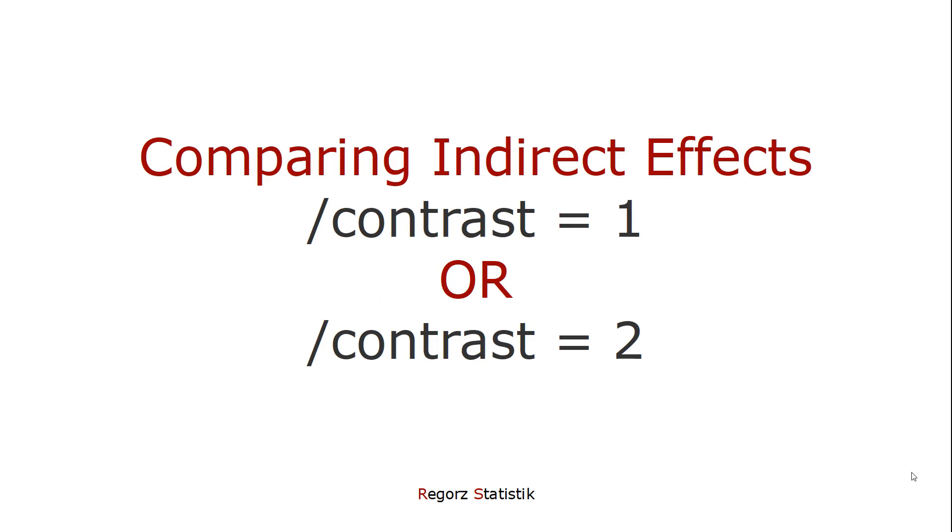In a parallel mediation, where you have two or more indirect effects parallel to each other, you might want to compare them, whether they are significantly different from each other. Here you have the choice. You can set this parameter contrast to 1. Then the difference between those effects is tested.